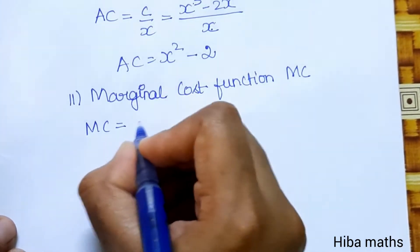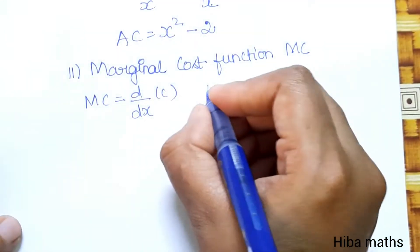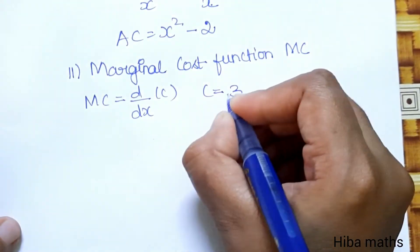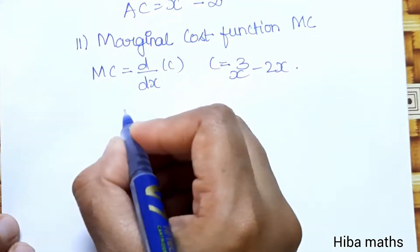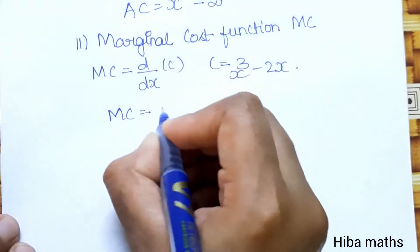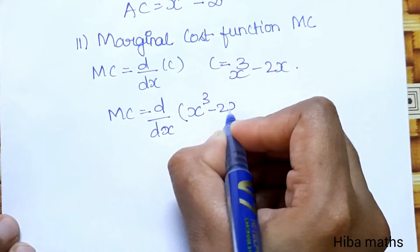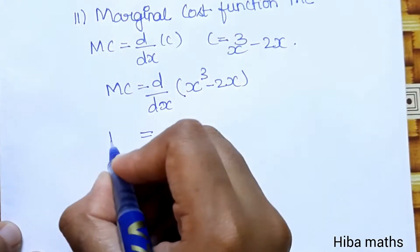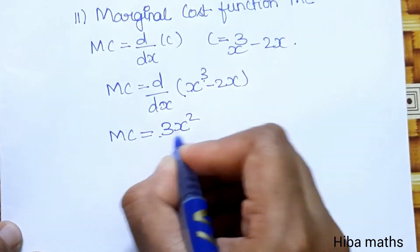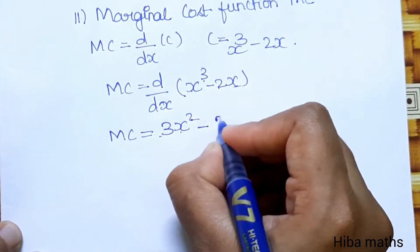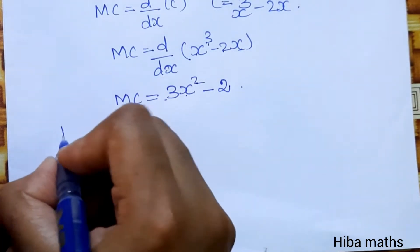Marginal cost MC = d/dx of C. The value of C is x³ - 2x. Differentiating: d/dx(x³) = 3x² using the formula d/dx(xⁿ) = nxⁿ⁻¹, and d/dx(-2x) = -2. Therefore MC = 3x² - 2.